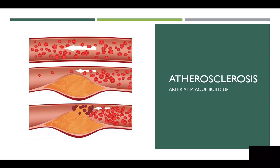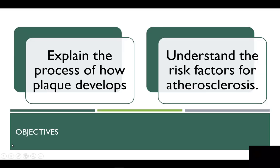Atherosclerosis is a condition of coronary heart disease that involves progressive narrowing of the arterial vessels that interferes with blood flow. The development of plaque and hardening of the vessel walls are common to this condition. In this video, we will explain the process of how plaque develops in the blood vessels and relate that to understanding the risk factors for atherosclerosis.